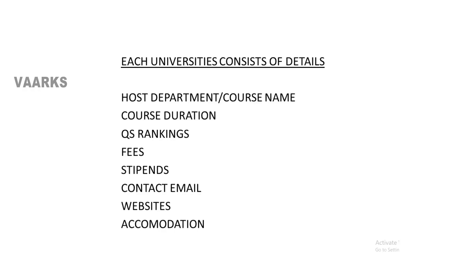The QS rankings section gives details of the rankings for each university, so candidates can assess the level of universities before applying. I have given the details of universities that are within the top 100 or 200 so that candidates can have better access to top universities. Then we deal with the details of fees for the PhD program. For some countries the PhD program doesn't have any fees, while for others fees apply specifically for the PhD program.